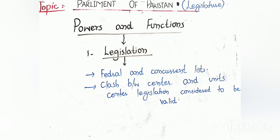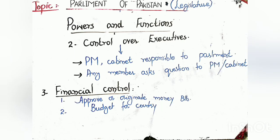Now let's discuss the functions of the National Assembly. The first and foremost function of any parliament in the world is to make legislation for its country and state. So the first function of Pakistan's lower house — the National Assembly — is legislation: law-making, whether it is criminal law, procedural law, civil law, constitutional law, ordinary law, marriage law — all types of laws are passed through legislation. In a federal country, there are three types of lists: federal, provincial, and concurrent. Pakistan being a federation, after the 18th Amendment, provinces were given much more autonomy. Therefore, all federal legislation and concurrent list legislation is handled by the federal government.